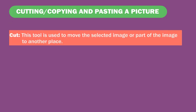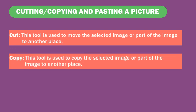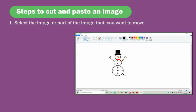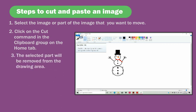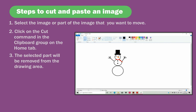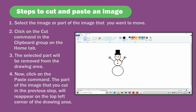Cutting, copying and pasting a picture. The Cut tool is used to move the selected image or part of the image to another place. Steps to cut and paste: select the image or part of the image you want to move, click on the Cut command in the clipboard group on the home tab. The selected part will be removed from the drawing area. Now click on the Paste command, and the cut part will reappear on the top left corner of the drawing area.